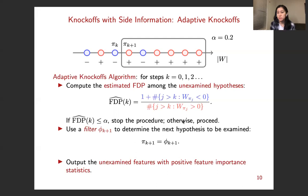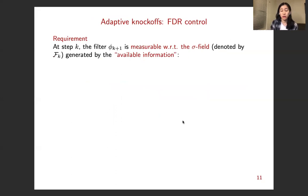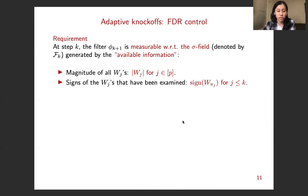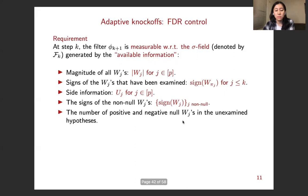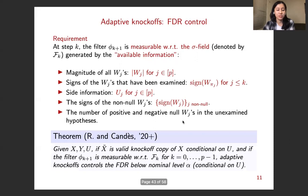So why don't we just put all of the red balls towards the end of the ordering? We can't do that because in order to have FDR control, there should be some requirements for the filter. So the requirement is that at step k, the filter phi k plus one should be measurable with regards to the sigma field generated by the available information. Here, the available information includes the magnitudes of all wj's, the signs of the wj's that have been examined, the side information, the signs of the null wj's, the number of positive and negative null wj's in the unexamined hypotheses. So we show in our paper that if the conditions for the vanilla knockoffs are satisfied and the filter phi k plus one is measurable with regards to the corresponding sigma field, our adaptive knockoffs controls the FDR at the desired level conditional on u.